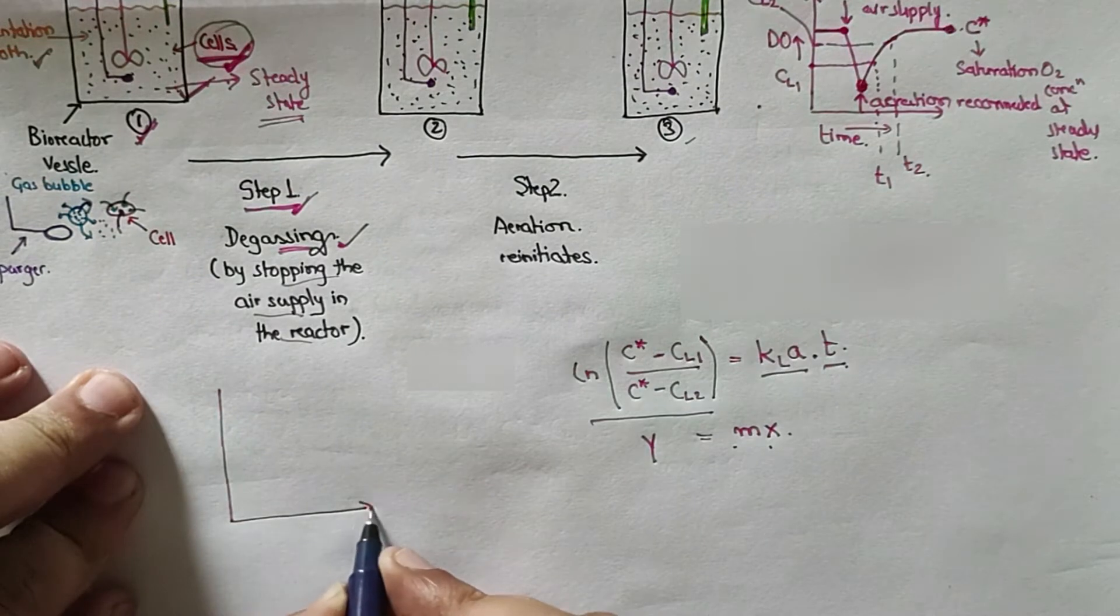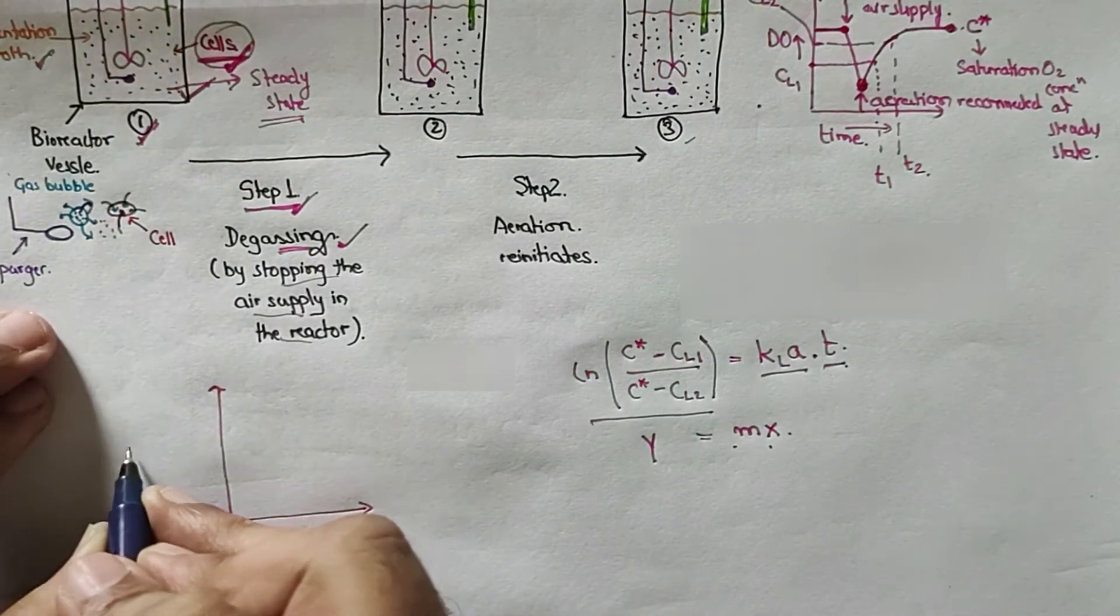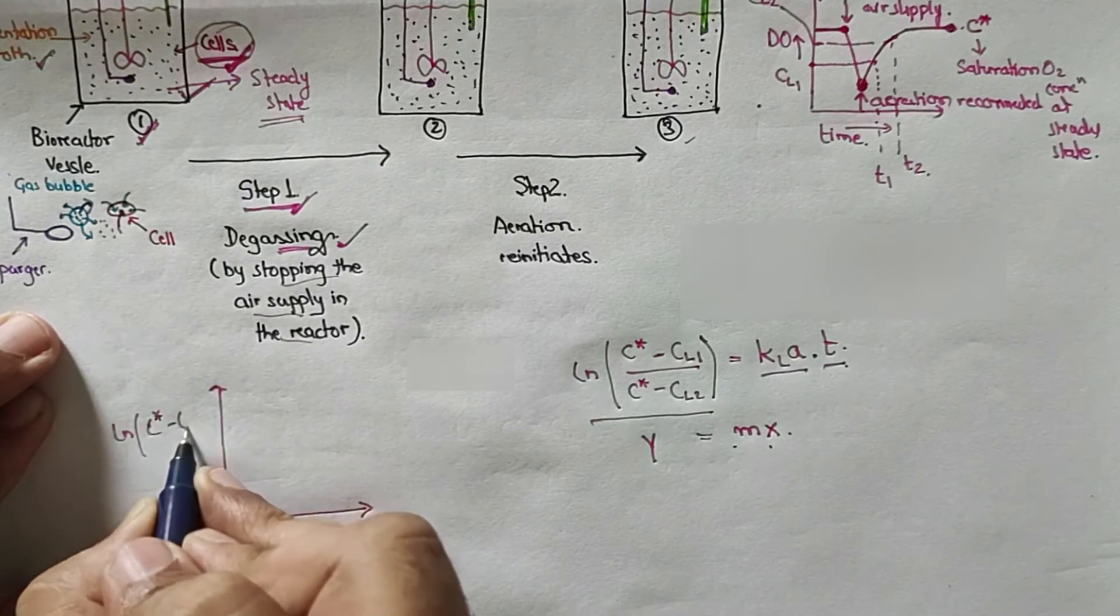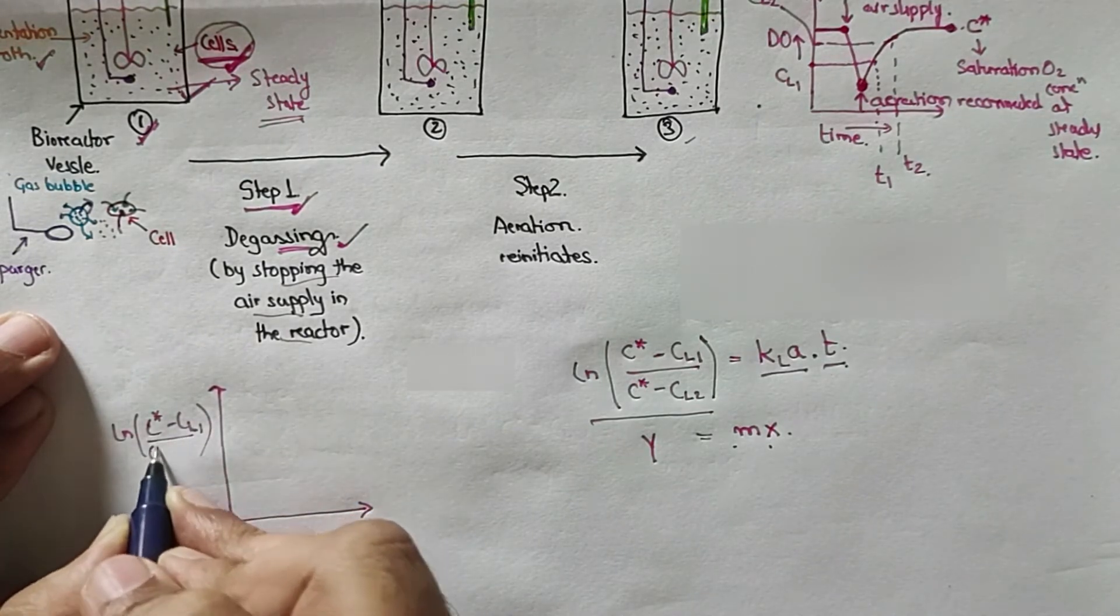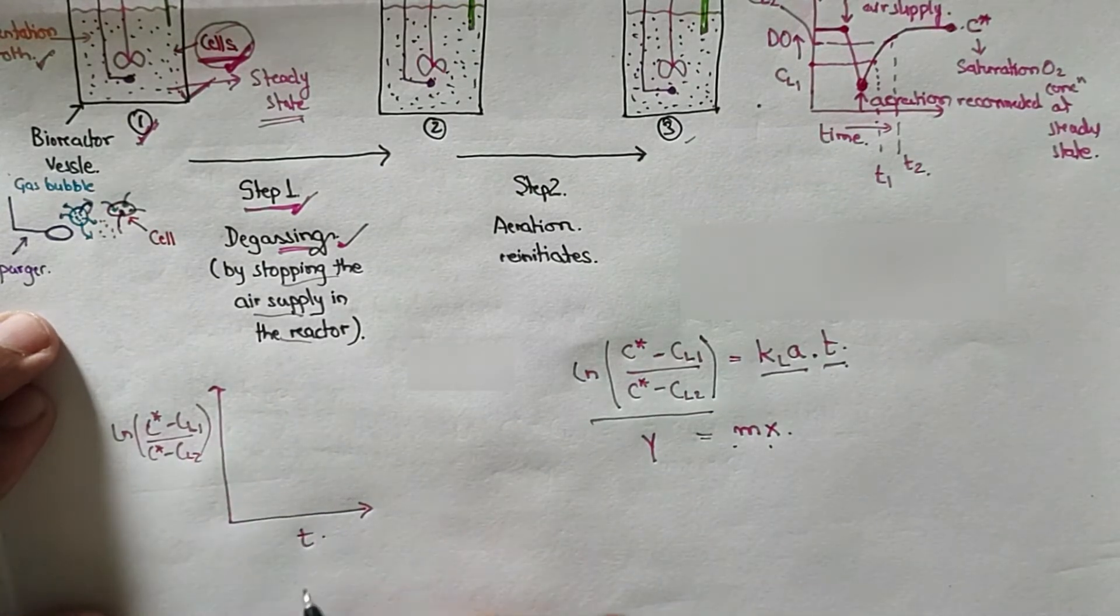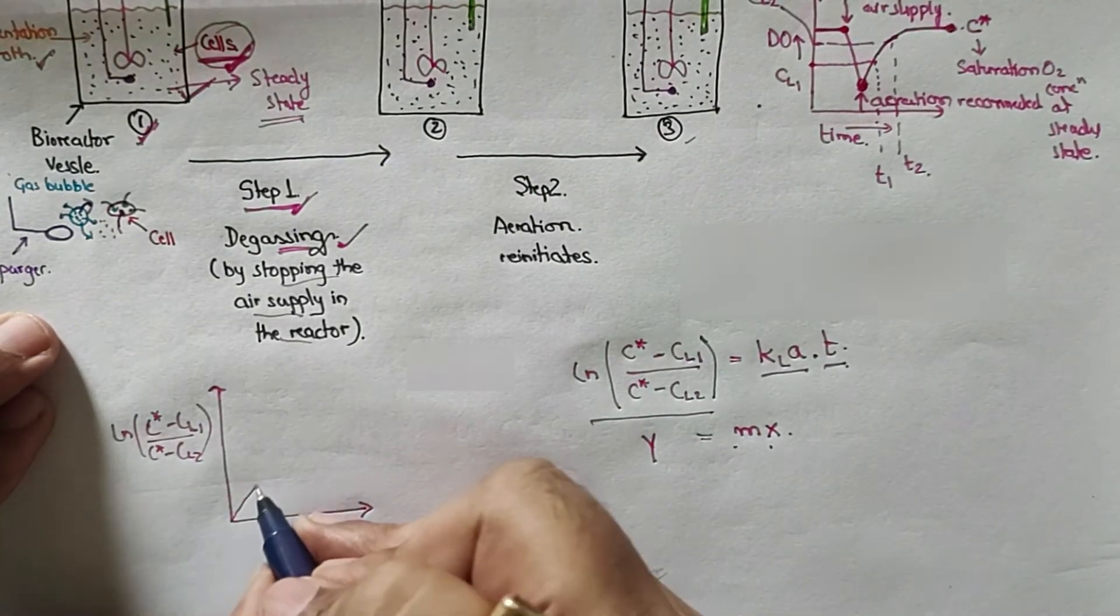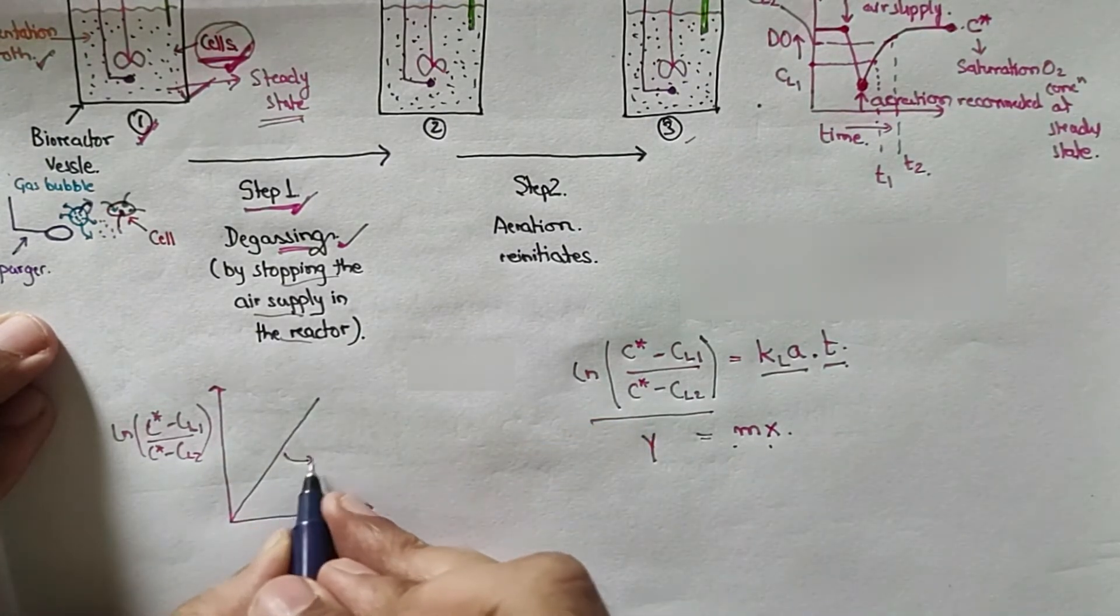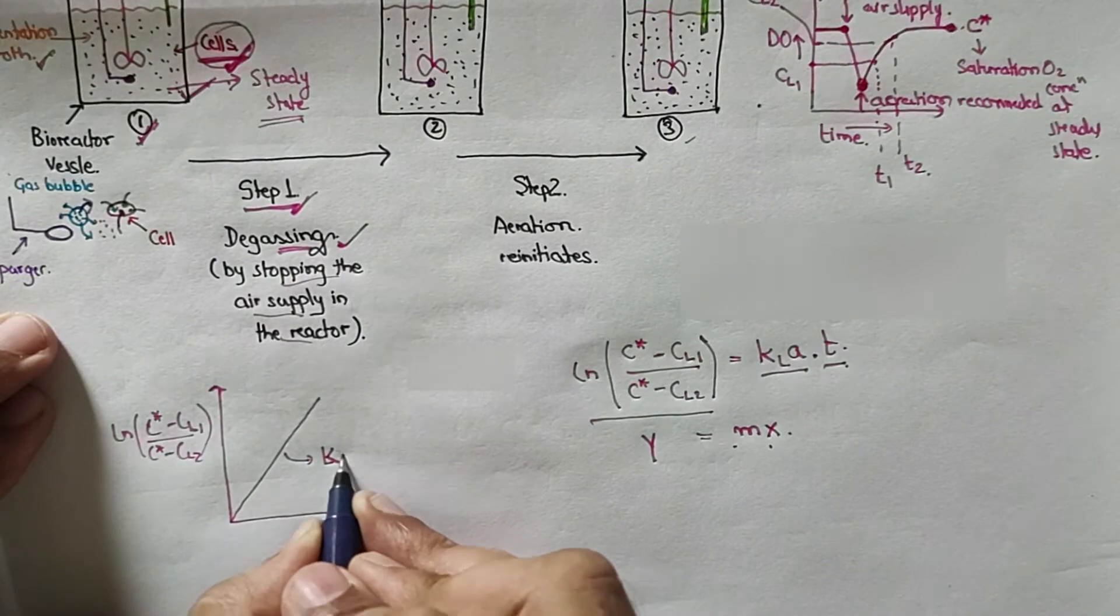If you plot a graph between ln(C* - CL1)/(C* - CL2) versus time, it will be a linear graph and the slope will be giving you the value of KLA.